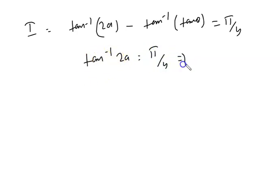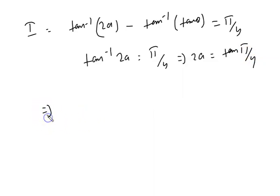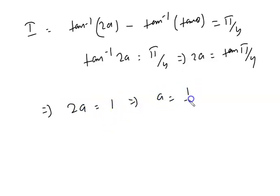When we remove the tan⁻¹, it becomes 2a equals tan(π/4). We know that tan(π/4) equals 1, so 2a equals 1, which gives us a equals 1/2. This is the correct answer for this question. Thank you.